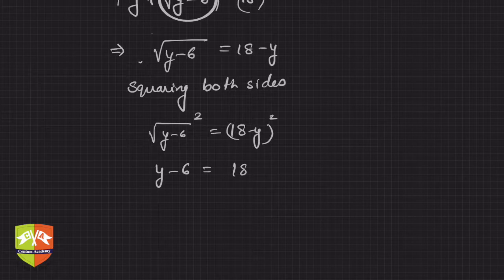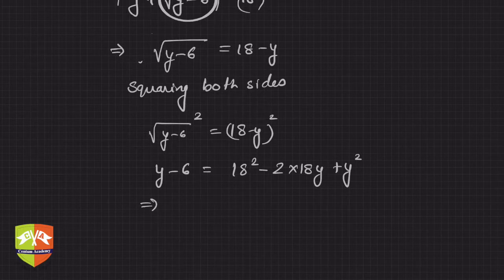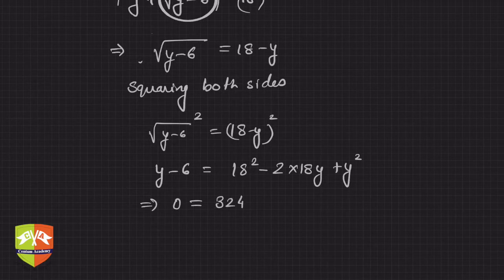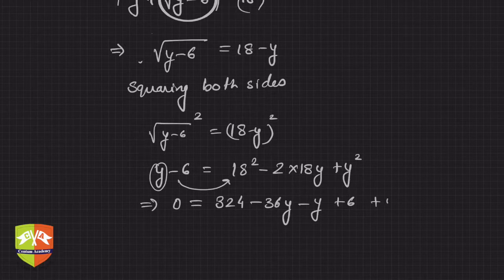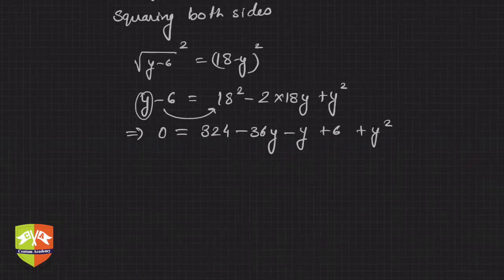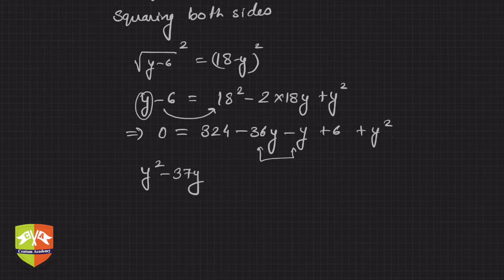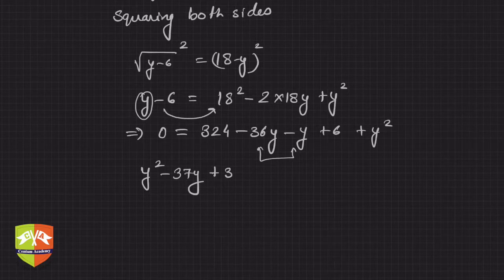Expanding the right side: (18 − y)² = 324 − 36y + y². Bringing everything to one side: y² − 36y + y − 324 + 6 = 0, which simplifies to y² − 37y + 330 = 0.